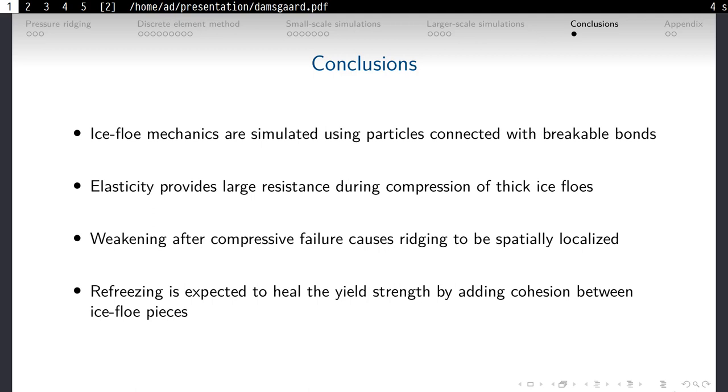So to conclude. In this study, we've used the discrete element method to simulate ice flow mechanics, and in particular, we've explored the role of breakable bonds, and come up with some way of including ridging in discrete element sea ice models. We show that elasticity provides a large resistance during the early stages of ice compression, but as soon as ridging begins to happen, the contacts actually weaken quite dramatically, and this causes a strain weakening and a localization of strain. We do expect that any kind of refreezing will heal the assemblage in the post-failure state by adding new cohesion and strength between this chaotic rubble of ice flow pieces.